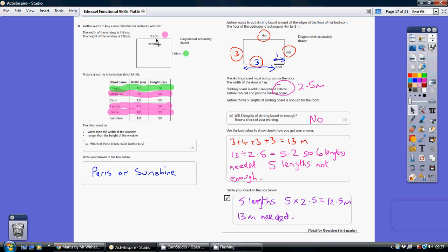First of all, let's concentrate on the width. The width has got to be greater than 115. I've crossed off the ones that are not having a width greater than 115. I've crossed off Michigan, Festival and Telstar because each of these widths is less than 115.